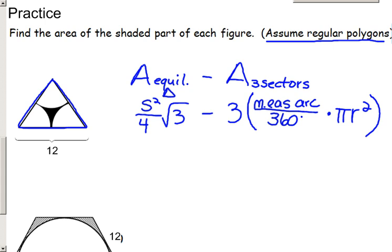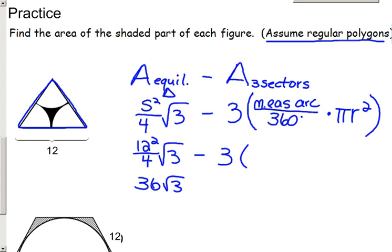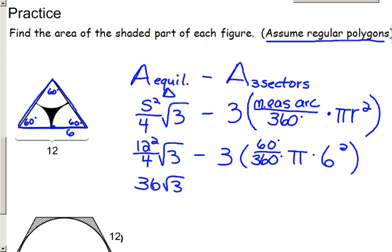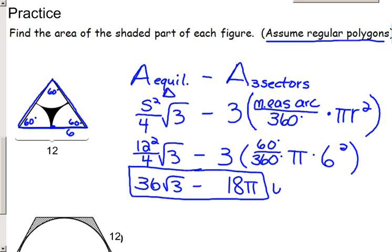Since the side of the triangle is 12, we plug in to get 12 squared over 4 root 3, giving an area of the equilateral triangle of 36 root 3. For the three sectors, since this is an equilateral triangle, the corner angles are all 60 degrees, which are the central angles for the sectors. So we compute three times (60/360) times pi times 6 squared, where 6 is half the side length. Simplifying gives one-half of 36 pi, or 18 pi. The total shaded area is 36 root 3 minus 18 pi units squared.